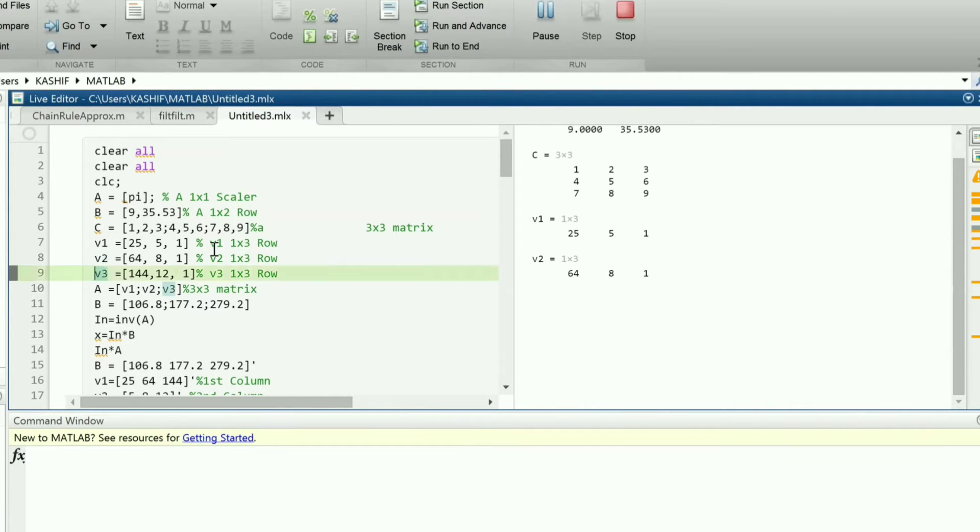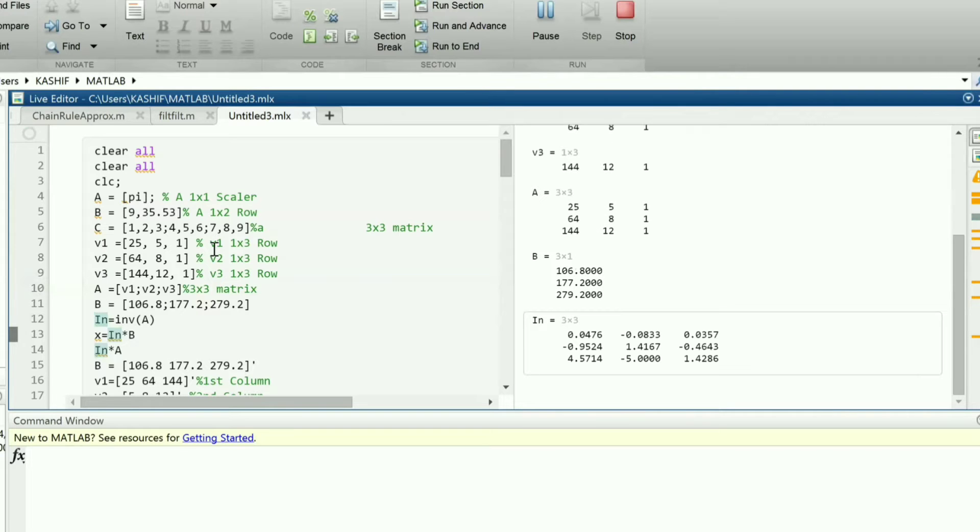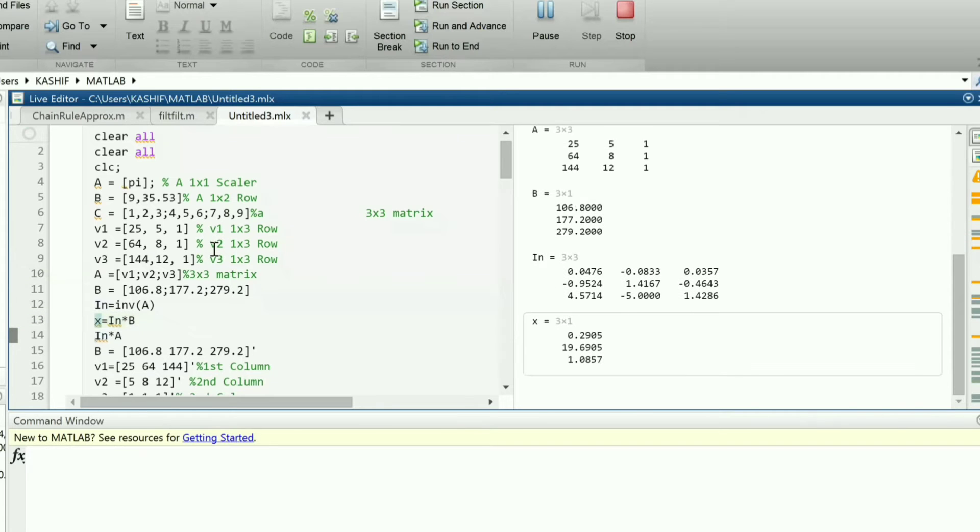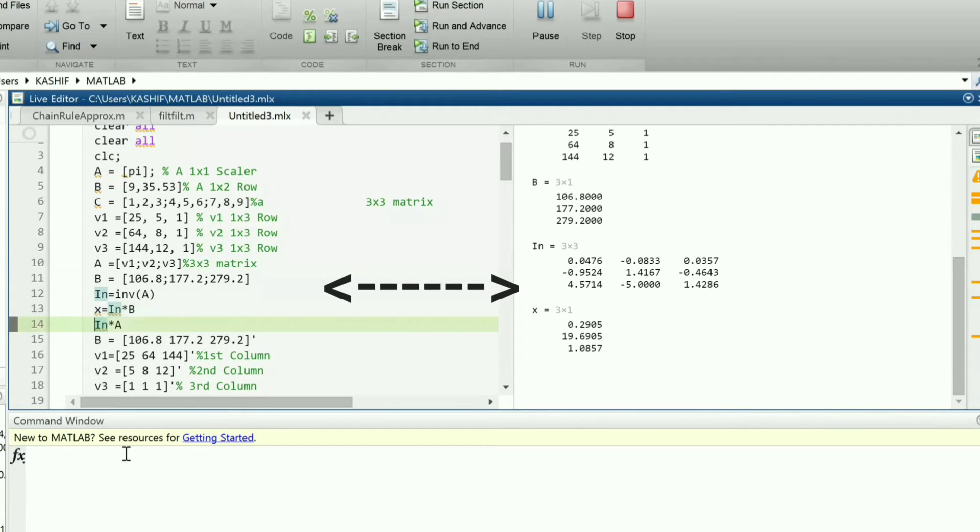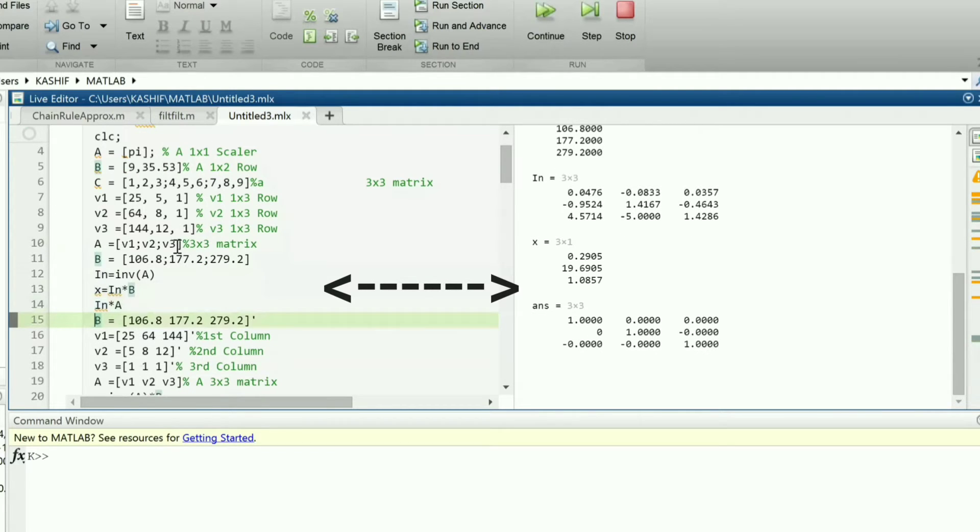We generate 3 row vectors v1, v2 and v3. From these vectors we generate a matrix A. The previous values of A are overwritten. The values of vector b is again overwritten with 1 by 3 vector, meaning that we can dynamically change the size of a matrix but should be done carefully. This is followed by taking the inverse of the matrix and multiplying with the vector b. Such a situation arises in systems of linear equations. The multiplication of a matrix with its inverse is the identity matrix as shown.